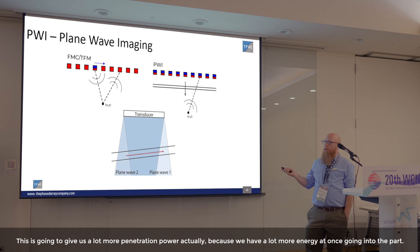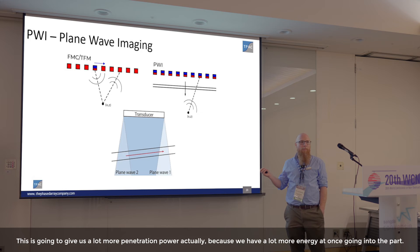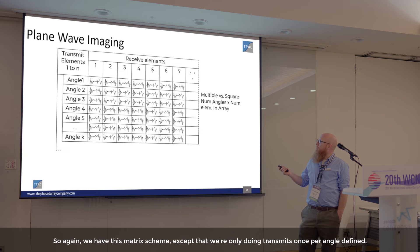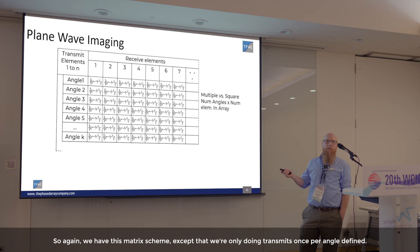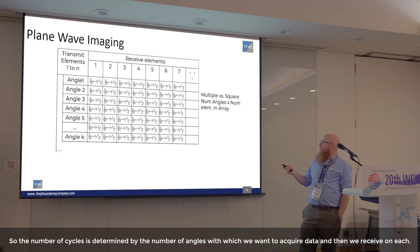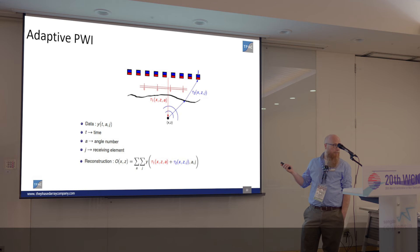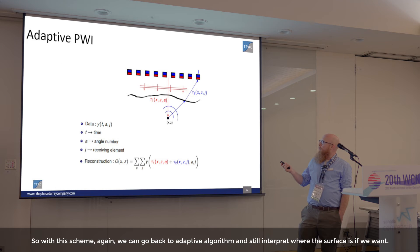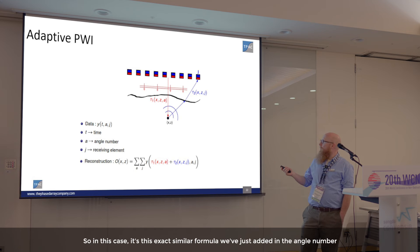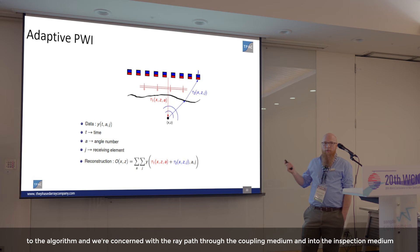Plane wave imaging gives us more penetration power because we have a lot more energy going into the part at once. In the matrix scheme, we are only doing transmits once per defined angle, so the number of cycles is determined by the number of angles we want to acquire. We then receive on each element. We can still apply the adaptive algorithm to interpret where the surface is. In this case, it's essentially the same formula — we've just added the angle number to the algorithm.